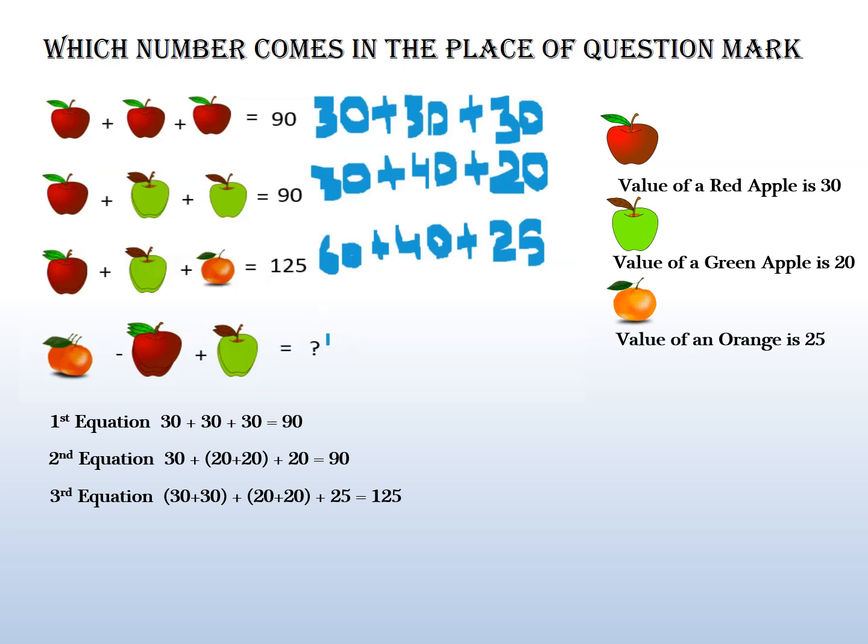Then in the last line, 3 oranges, so 3 times 25 is 75, minus 3 red apples, so 3 times 30 is 90. Then 2 green apples, so 2 times 20 is 40.